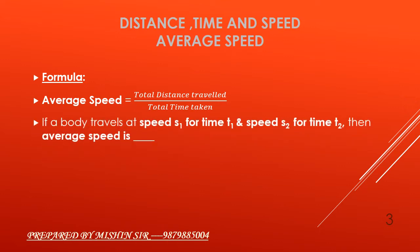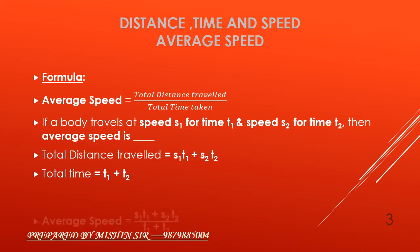If a body travels at speed s1 for time t1 and speed s2 for time t2, then average speed is: Total distance travelled is equal to s1 t1 plus s2 t2. Total time taken is equal to t1 plus t2. Average speed is equal to s1 t1 plus s2 t2 upon t1 plus t2. Now we will apply this formula.